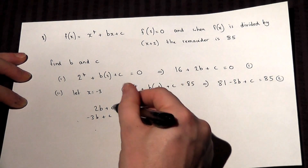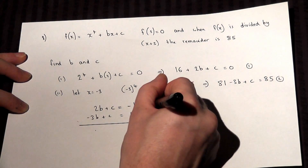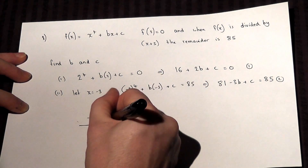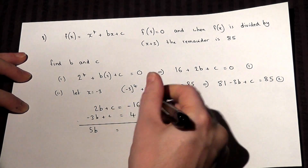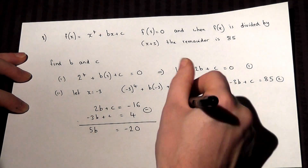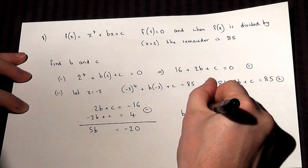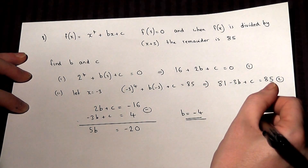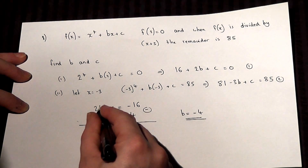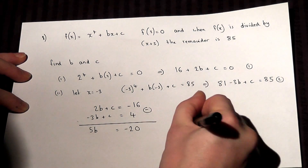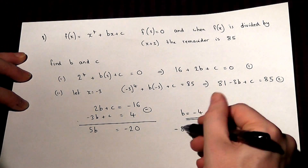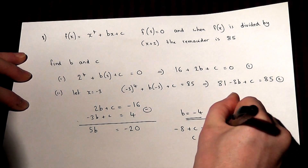Now, to make the c's cancel off, if I subtract the equations from each other, 2b take away minus 3b is 5b. The c's cancel off, and minus 16 take away 4 is minus 20. So 5b equals minus 20, so b equals minus 4. Then, to find c, I can just use one of the equations: 2 times b is minus 8, so minus 8 plus c equals minus 16. So c will equal minus 16 plus 8, which is minus 8.